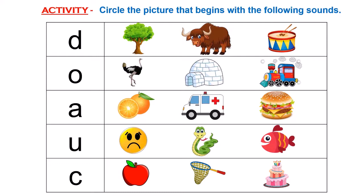In today's activity, you have to circle the picture that begins with the following sounds. Look at the first letter. The pointer is pointing at letter D. And you all know the sound that letter D makes? D says Duh.